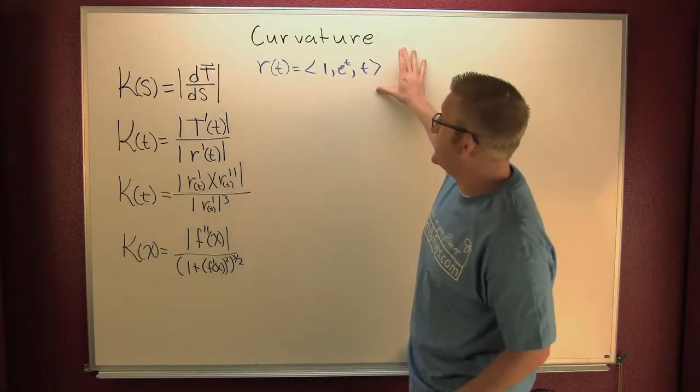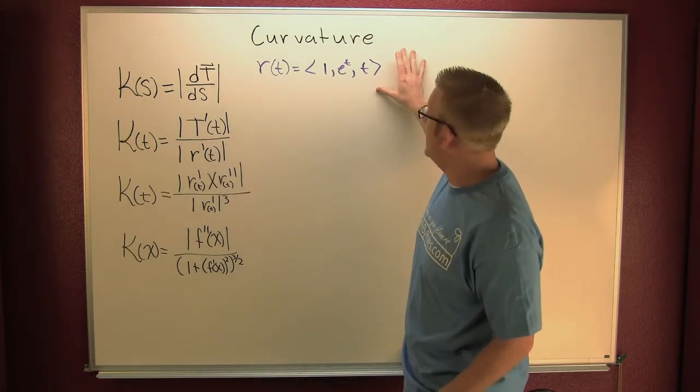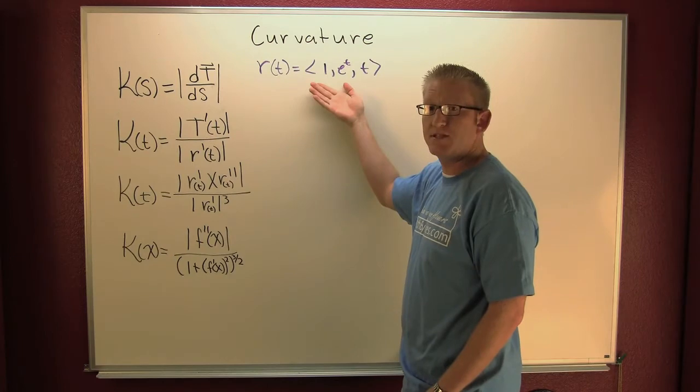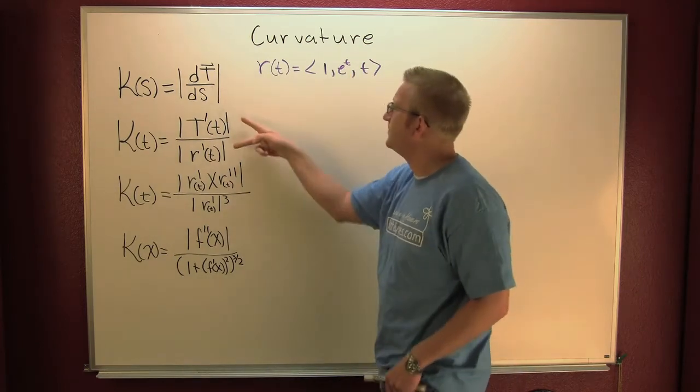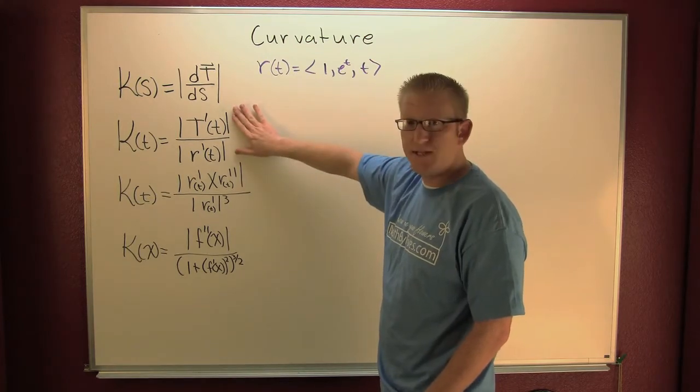But for now, what if we were presented with a vector valued function in the wild? Could we find an arc length parametrization and use that? Yes. Taxing.